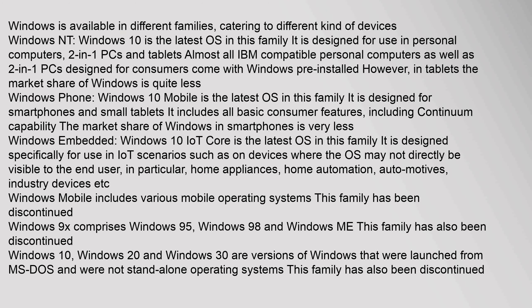Windows is available in different families catering to different kinds of devices. Windows NT: Windows 10 is the latest OS in this family, designed for use in personal computers, 2-in-1 PCs and tablets. Almost all IBM-compatible personal computers as well as 2-in-1 PCs designed for consumers come with Windows pre-installed. However, in tablets the market share of Windows is quite less.